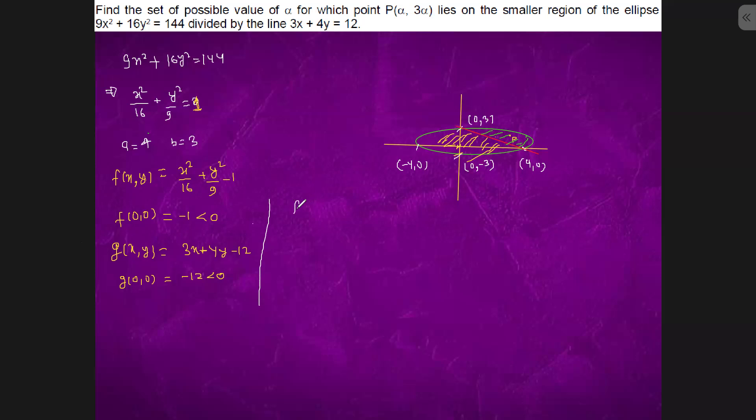So for ellipse, (α, 3α) will be negative. We will proceed with that. f(α, 3α) is α²/16.